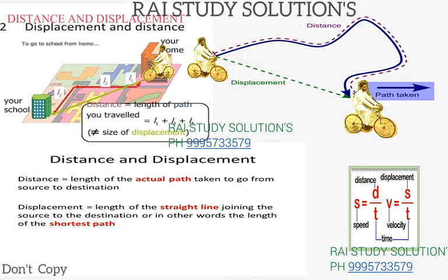This is displacement. Displacement is what happens when you draw a straight line from start to finish — the same straight line from beginning to end. We are learning this well. Now let's go to a problem.